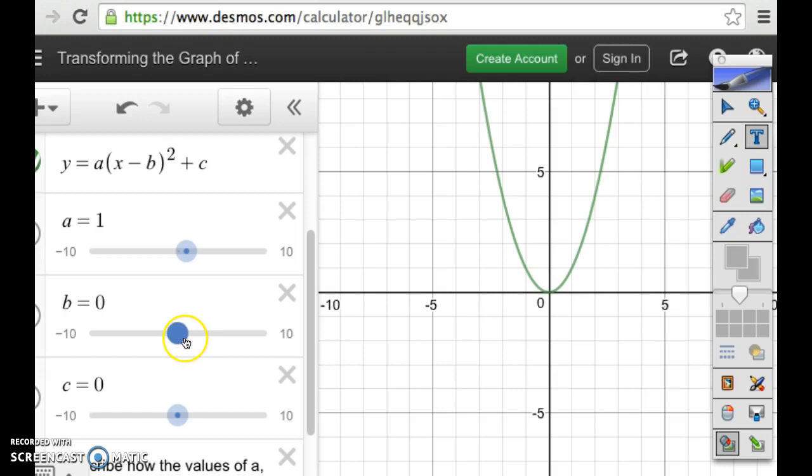Good. All right, b. What happened when we moved the b around? It moved less than the a around. Does it change the shape of the parabola? No. So, when we're changing our b, as it gets larger, it moves to the right. As it gets smaller, it moves to the left.